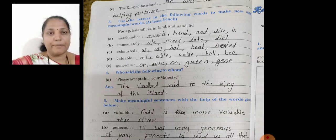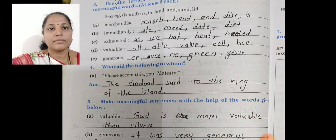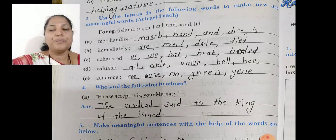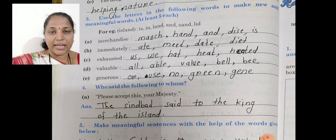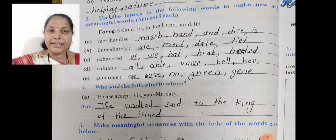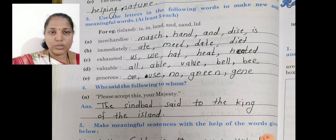Our third question is: use the letters in the following word and make new and meaningful words. Aapko yeh jo words diye hain, isse aapko meaningful words banana hain. Ek example ke taur pe unhone yahan pe island ka — is, in, land, sand, and lead. Maine yahan pe prepare kiya hai aur isse aur bhi words bante hain, so you write the other words mentioned in your notebook.